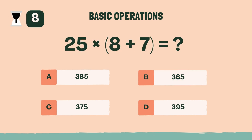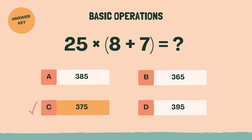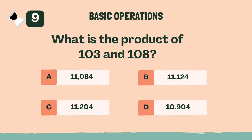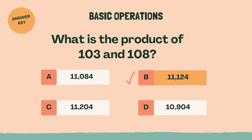What is 25 times 8 plus 7? The answer is C, 375. What is the product of 103 and 108? The answer is B, 11,124.